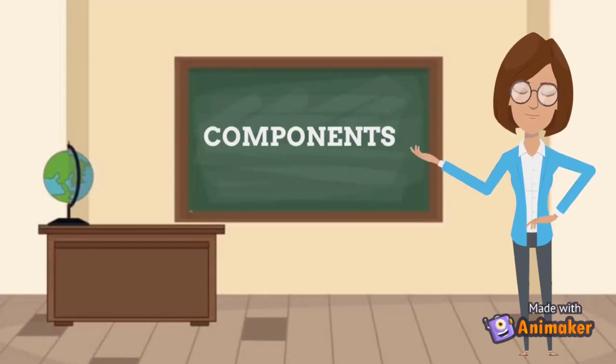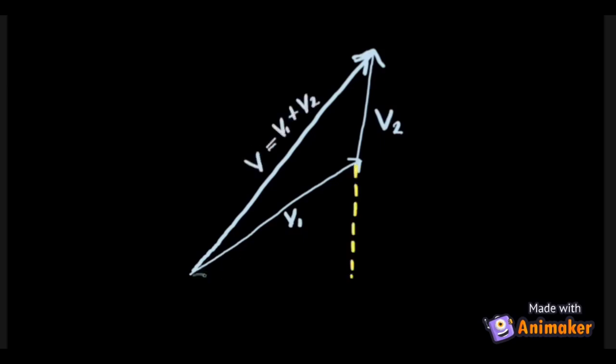The second way to specify a vector is by using components. This is very useful for situations involving two or more vectors. For example, let's resolve all the vectors into their components. For vector 1, we draw a dashed line for X and Y components and we do the same with vector 2.